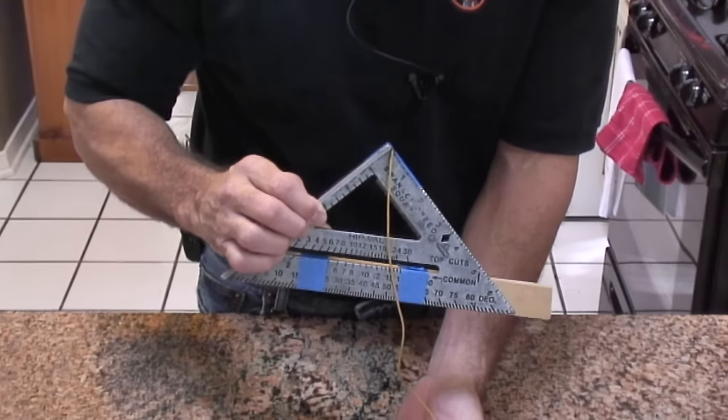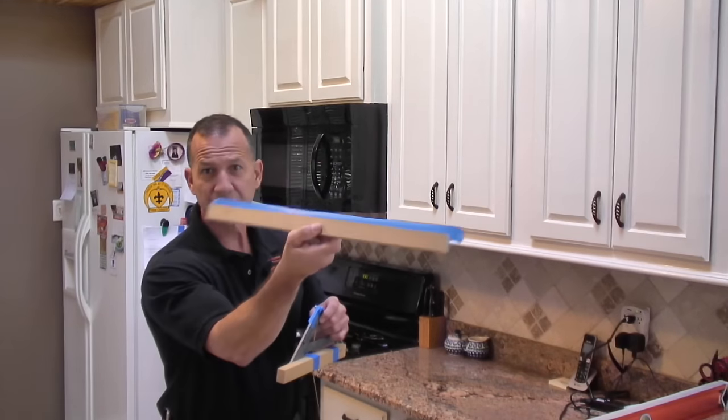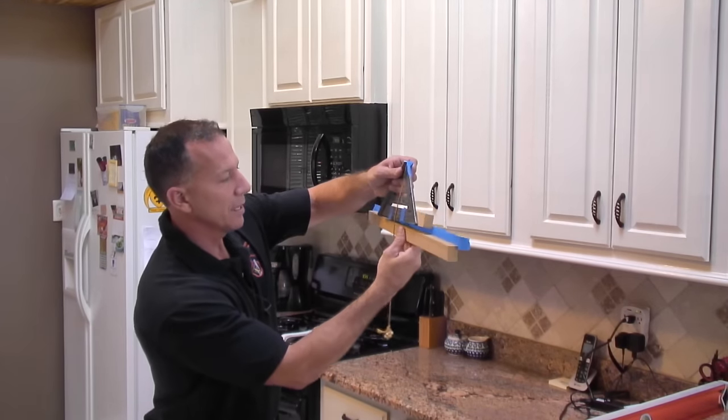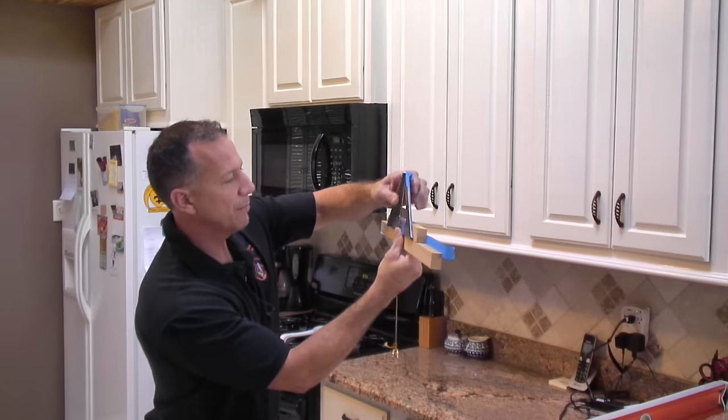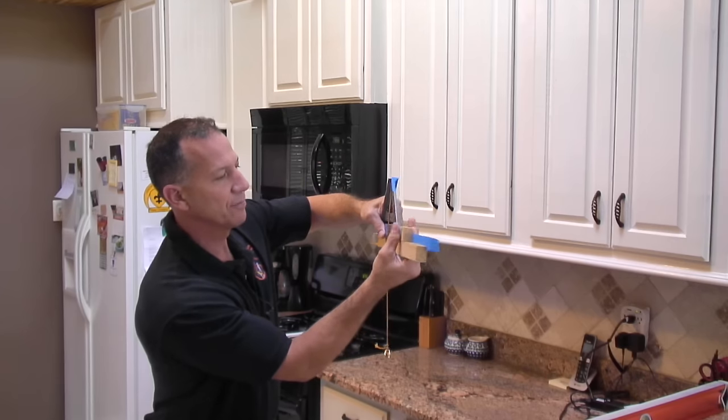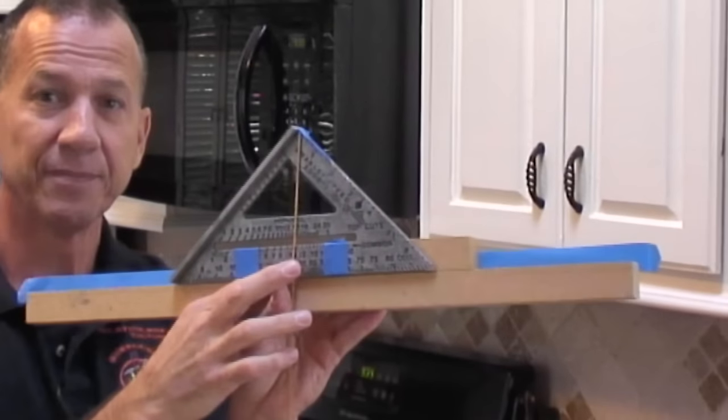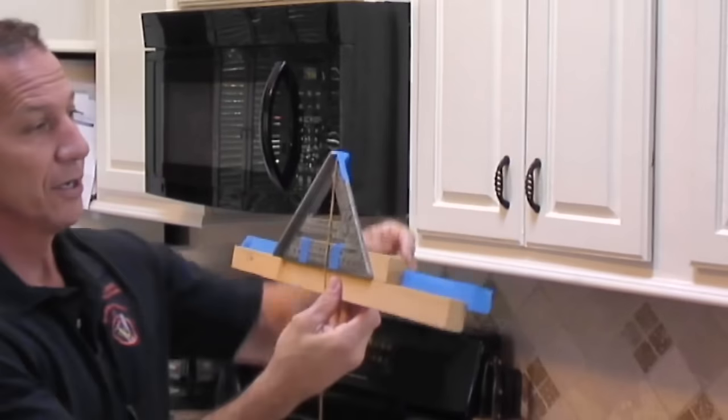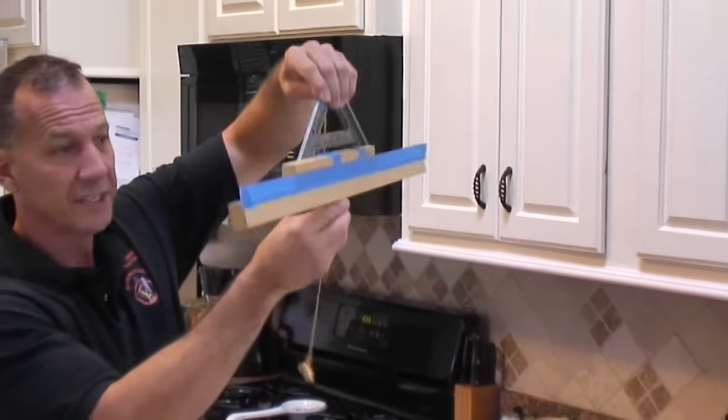Now we're ready to work with it. We're going to take the straight edge that I have with the tape and we're going to set this block right on top of that. Now we can tape them together. Once you tape this together, you have a level that you can walk around with and set on top of things.